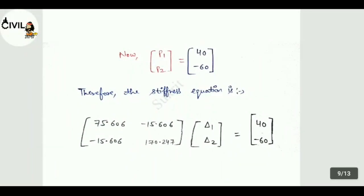Now, forces given: 40 and 60. So P1 is equal to 40 and P2 is equal to minus 60, same X or Y direction, positive negative. Therefore, the stiffness equation: 75.606 mean K11, minus 15.606 K12, minus 15.606 K21, and 170.247 means K22. And delta 1, delta 2 is equal to 40 and minus 60.